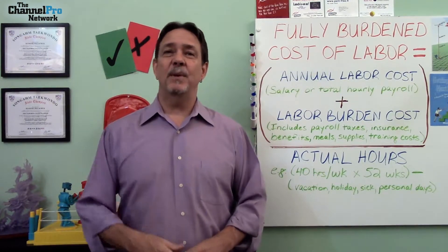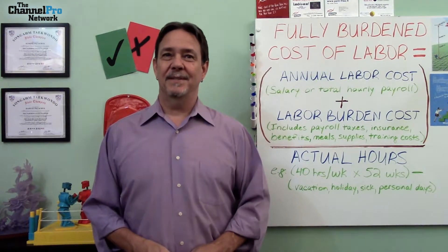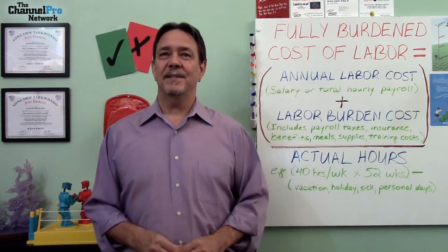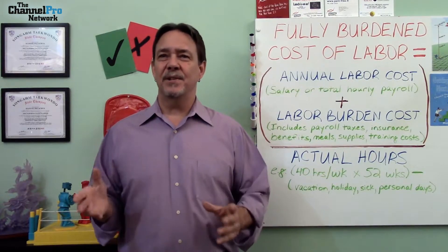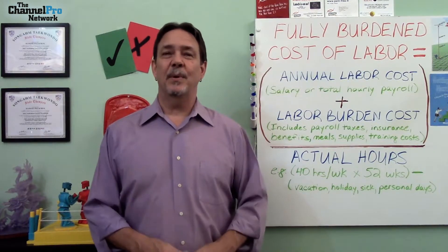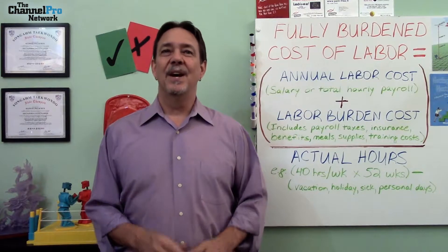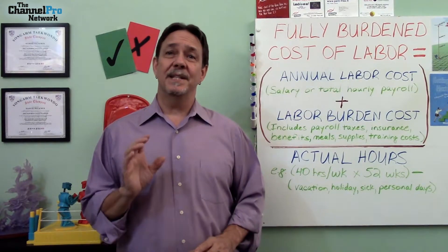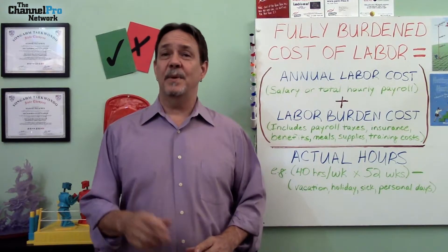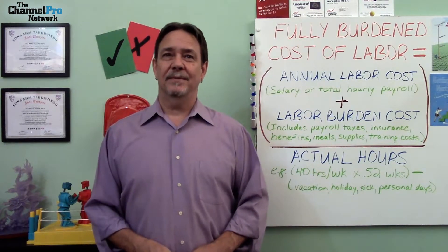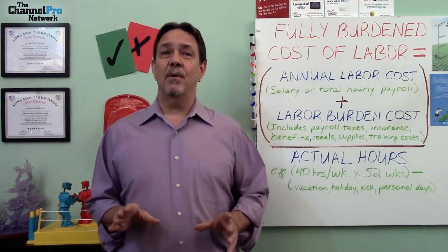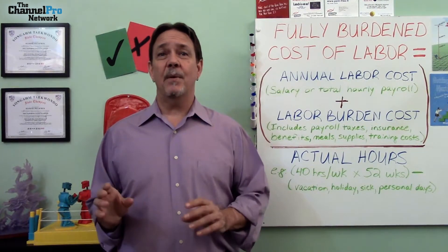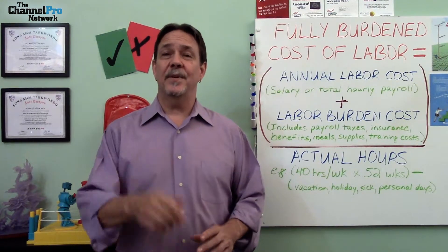...you start with the employee's annual payroll cost. Second, you calculate the labor burden cost — these are the additional costs of having employees. Third, you calculate the actual hours this person is expected to work for the business for the year. And finally, you divide the total cost of the employee by the actual hours, and you've got the fully burdened cost of labor.